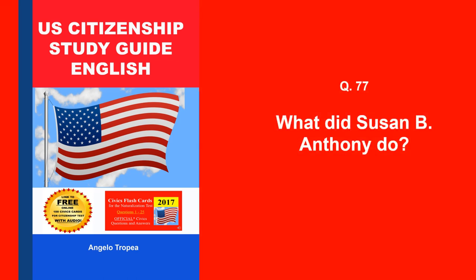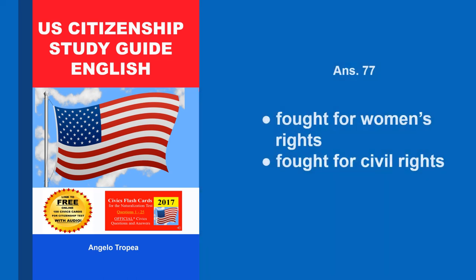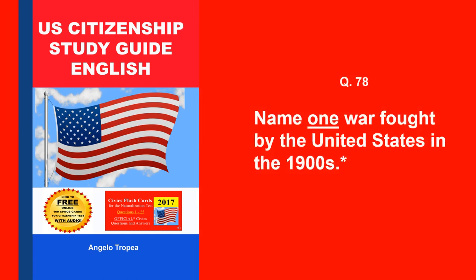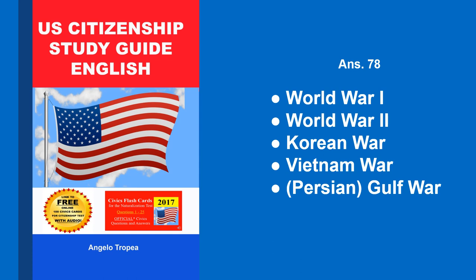What did Susan B. Anthony do? Fought for women's rights, fought for civil rights. Name one war fought by the United States in the 1900s. World War I, World War II, Korean War, Vietnam War, Persian Gulf War.